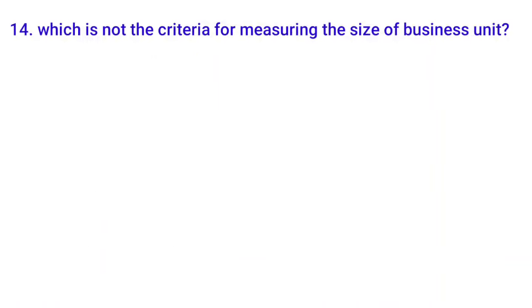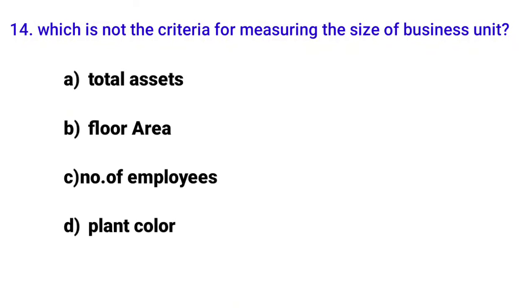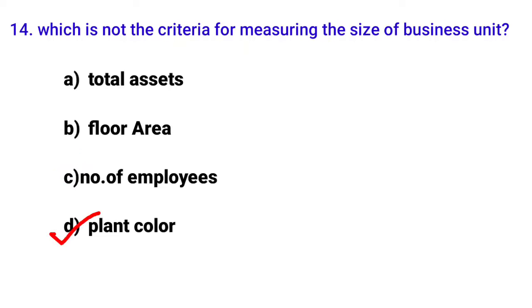Fourteenth MCQ: 'Which is not a criterion for measuring the size of a business unit?' Business size can be small or large scale and can be measured by various criteria. Options include total assets, floor area, and number of employees — all of which can measure business size. The fourth option is plant color, which cannot measure business size. So option D is the correct answer.